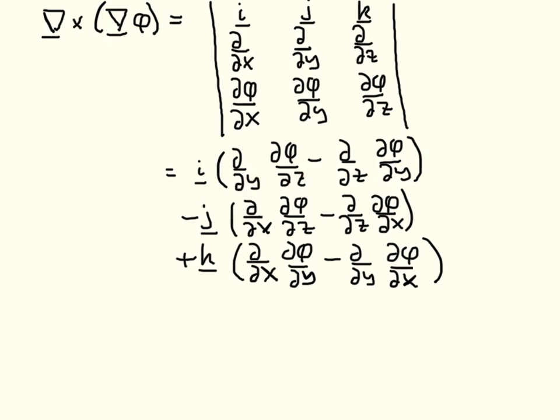and then here, don't forget the minus sign, we differentiate first with respect to y and then with respect to z. By equality of mixed partial derivatives, this and this will be the same, and due to the minus sign, they will cancel.